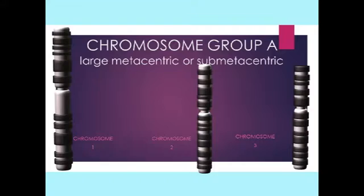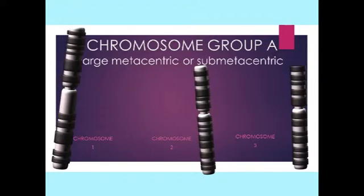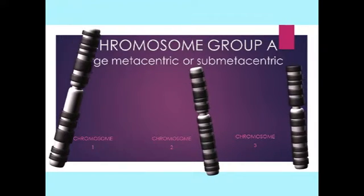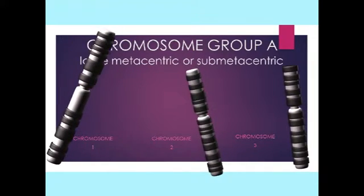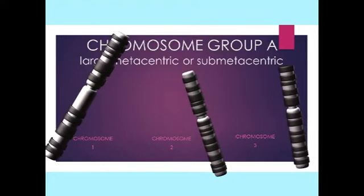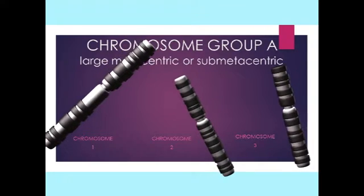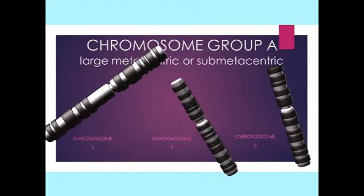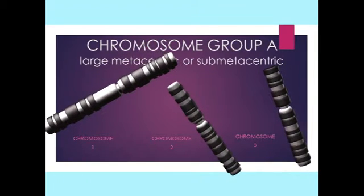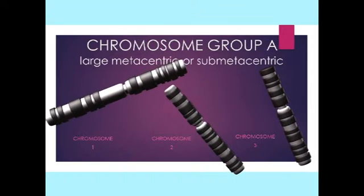Physically, human chromosomes are divided into seven groups. Group A includes chromosomes 1, 2, and 3, which are the largest chromosomes and are either metacentric or submetacentric.